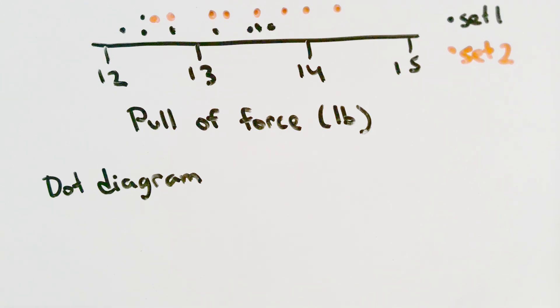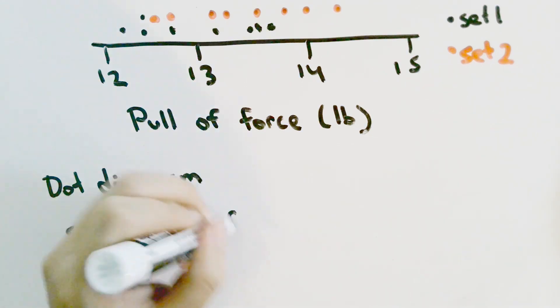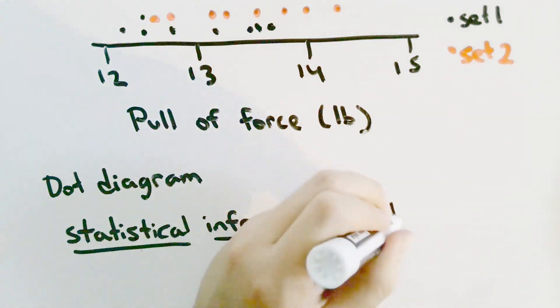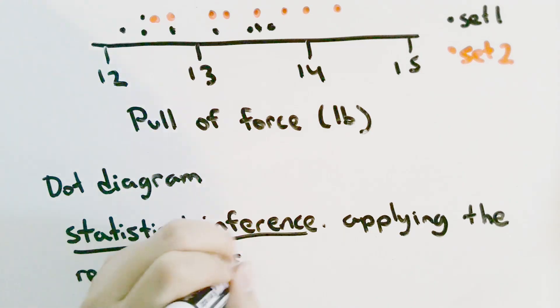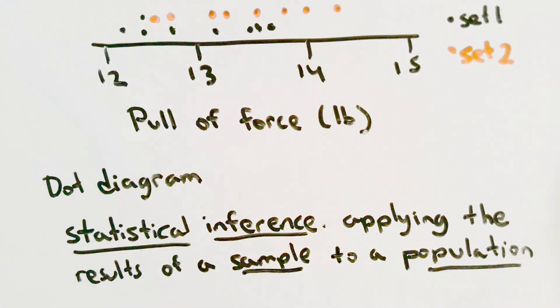Part of the reason we take these measurements is to apply them into a population. This is called statistical inference. We can define statistical inference formally as the application of the results of a sample to a population.